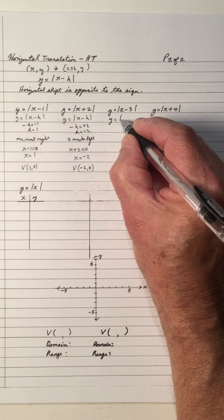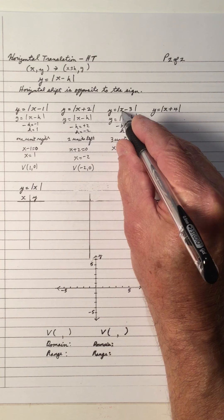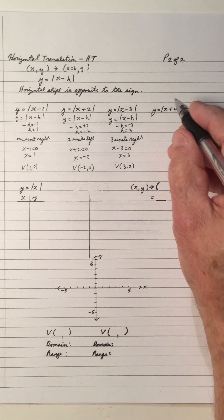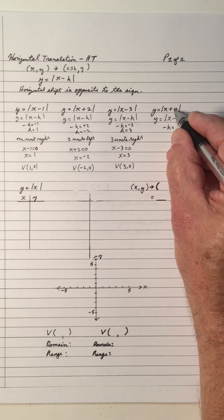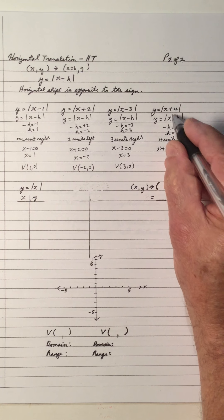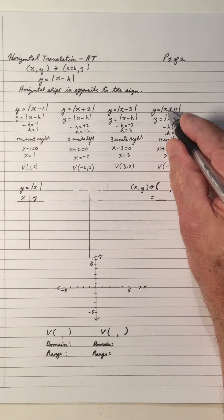For the third equation, Y equals the absolute value of X minus 3: negative H equals negative 3, so H equals 3 — that's 3 units right. Setting X minus 3 equal to 0 gives X equals 3, so the vertex is (3, 0). For the fourth equation, Y equals the absolute value of X plus 4: negative H equals positive 4, so H equals negative 4 — that's 4 units left. Setting X plus 4 equal to 0 gives X equals negative 4, so the vertex is (negative 4, 0).